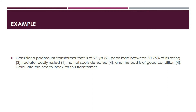Now let us go over an example. Consider a pad mount transformer that is 25 years of age, so the rating will be 2 in that category. The peak load is between 50 to 75% of its rating, so we give a rating of 3 in that category. The radiator is badly rusted, so it is a rating of 1 in that category. The IR test reveals no hotspots are detected, so the highest rating of 4 is assigned. And the pad is in good condition, so again, 4. Calculate the health index for this transformer.